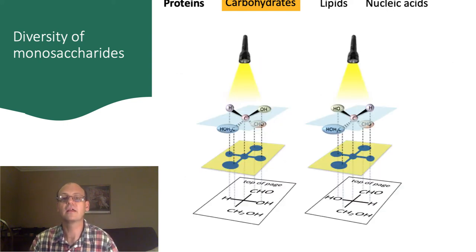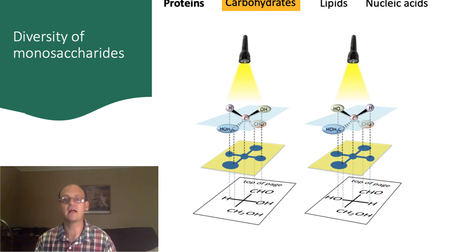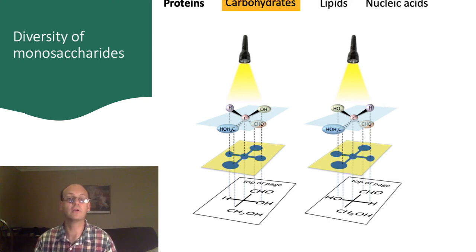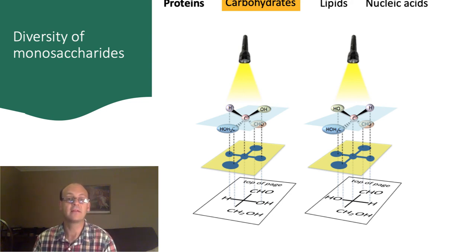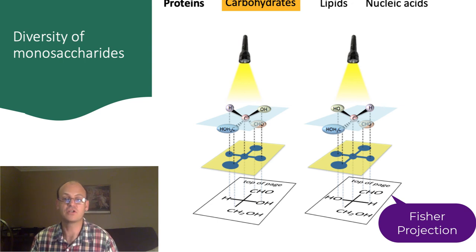Let's look a little bit more deeply at how that works, starting with a very simple carbohydrate with only one chiral carbon atom. Remember that the central carbon is chiral because it has four different groups attached to it. Imagine orienting it so that your eyes are where the flashlight is. The carbonyl group, CHO, would be at the top, and the terminal carbon would be at the bottom. The H and OH groups would be at the side, coming out of the paper towards you. This diagram shows how a Fischer projection is drawn using this orientation.